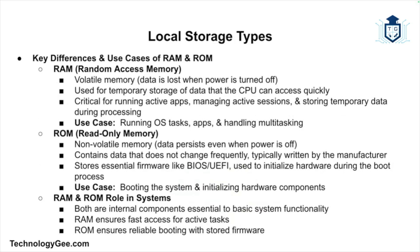RAM, or random access memory, is volatile memory used for temporary data storage that the CPU can access quickly. Use cases include running active applications, storing temporary data needed for processing, and managing active sessions.